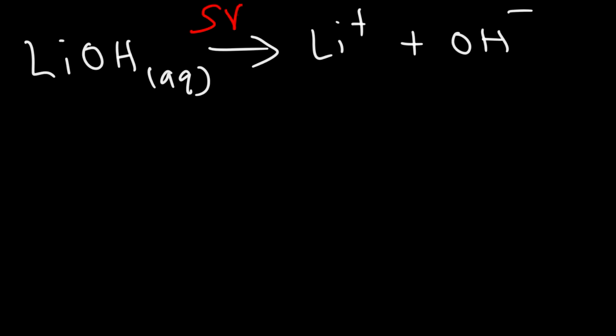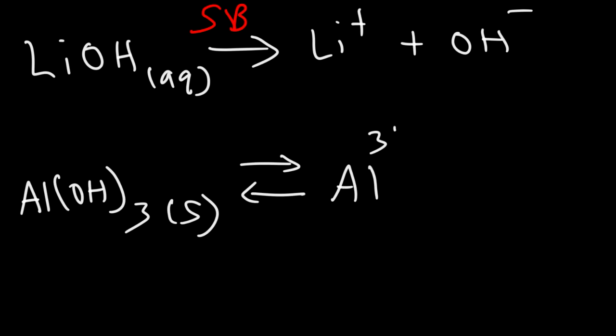Now, a weak base like aluminum hydroxide, it doesn't dissociate completely because it's insoluble in water under neutral conditions. So only a small amount actually dissolves into hydroxide ions. And so that's why this base is much weaker than this one due to its solubility in water.